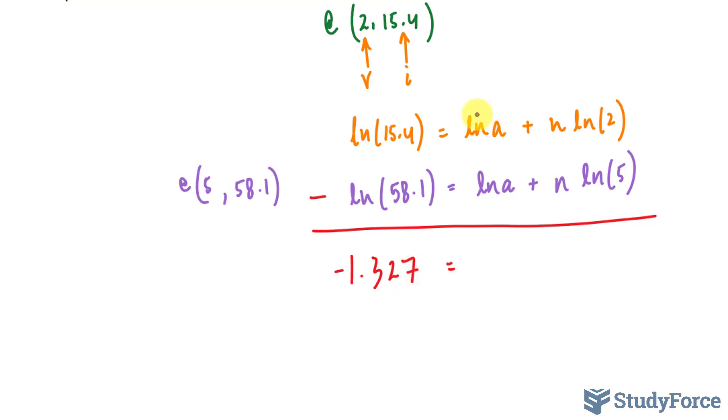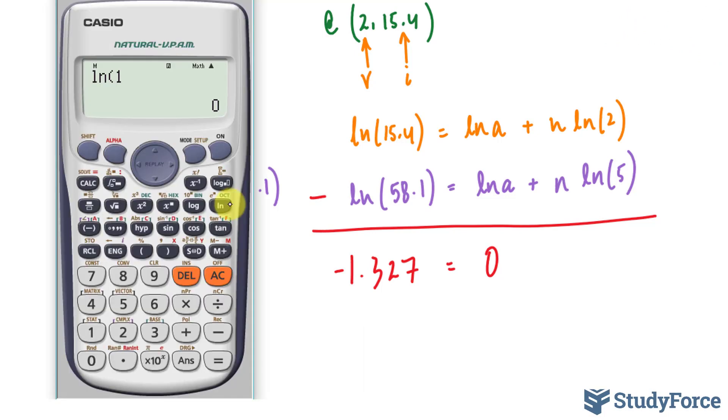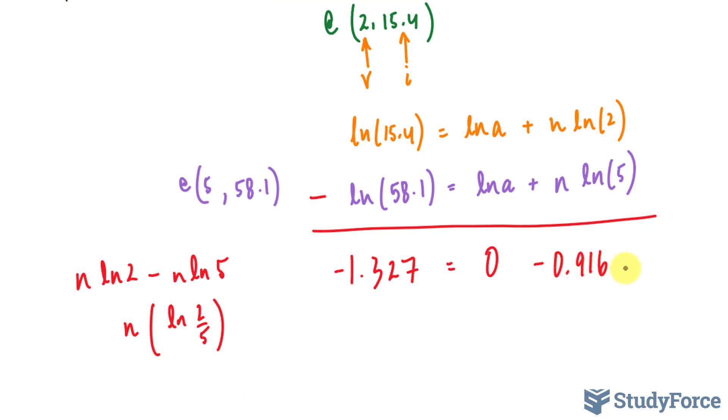And that's equal to subtracting ln a from ln a gives us 0. And subtracting n times ln 2 with n times ln 5, that's like saying n ln 2 minus n ln 5. And using the quotient rule, we can write n times ln 2 over 5. Well, let's find out what ln 2 over 5 is equal to. That gives us negative 0.916n.